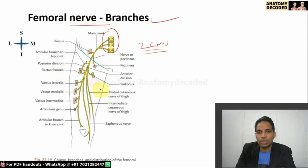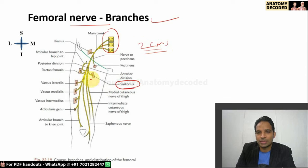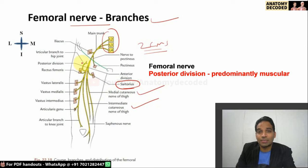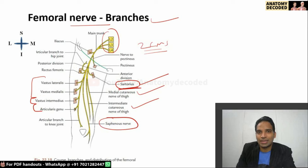The anterior division of the femoral nerve is predominantly cutaneous, except for one muscular branch to the sartorius muscle. The cutaneous branches include the intermediate cutaneous nerve of thigh and medial cutaneous nerve of thigh. The posterior division is predominantly muscular — supplying vastus lateralis, medialis, intermedius, and articularis genu — except one cutaneous branch, the saphenous nerve. Sartorius is supplied by the anterior division, not the posterior.